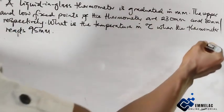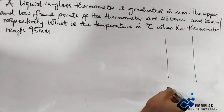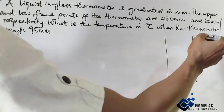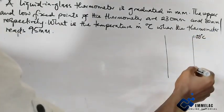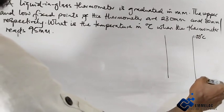Now we draw a line of comparison. For the normal temperature scale, the upper fixed point is 100 degrees Celsius and the lower fixed point is 0 degrees centigrade.